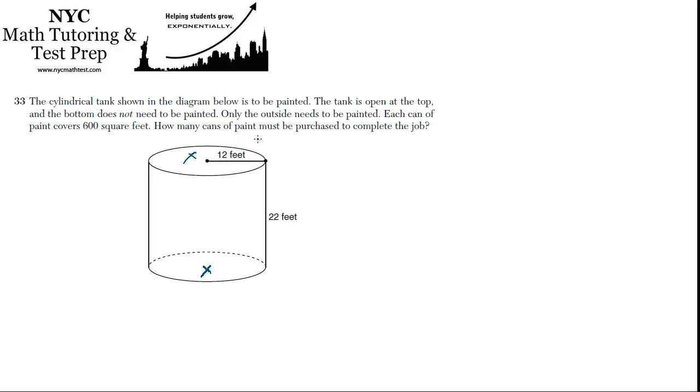And they want to know how much paint we need, how many cans. So each can of paint can cover 600 square feet. So what is the area, how many square feet, just on the lateral section of this thing? Well, let's see, how do we find that area?